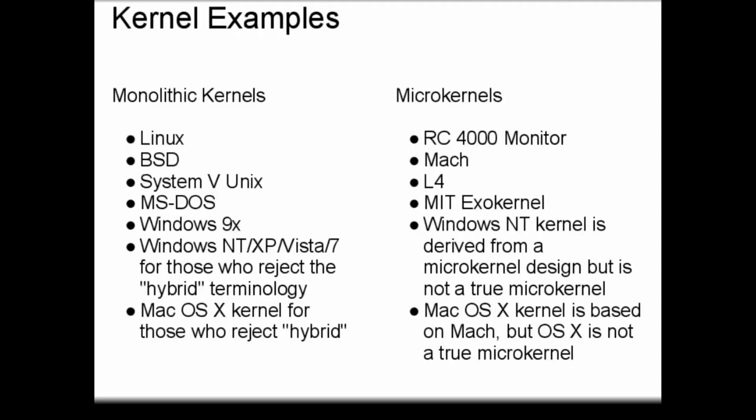Some examples of different types of kernels: for monolithic kernels, in addition to the System V Unix kernel — a descendant of the original Unix kernel — we have the Linux kernel, BSD, MS-DOS, and Windows 9x kernels. Windows NT, XP, Vista, and 7, if you prefer not to use the hybrid terminology, would also qualify as monolithic kernels, and the Mac OS X kernel falls into the same category. In terms of microkernels, the RC-4000 monitor kernel would be the earliest. Other examples include Mach, L4, the MIT exokernel project, and the original design behind the Windows NT kernel, which was based on a microkernel design. The same is true of the Mac OS X kernel, since it was originally based on the Mach microkernel — however, both have been heavily modified and now have many properties of monolithic kernels.